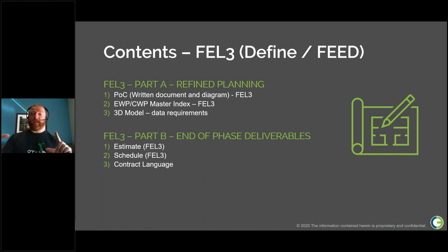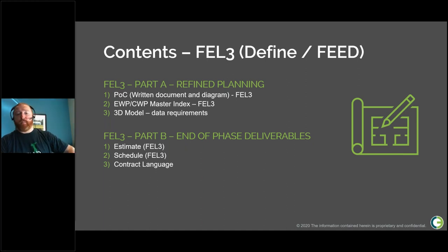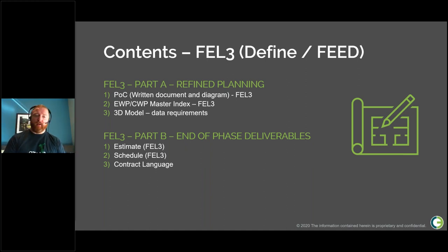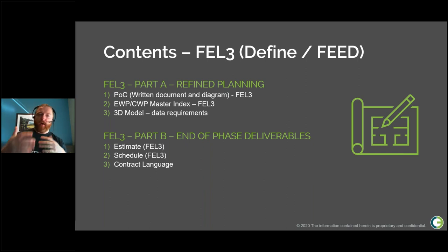FEL3 end-of-phase deliverables include updating the estimate and updating the schedule down to the CWP level of detail — a level three schedule where every EWP, PWP, and CWP is named, showing how work flows from engineering to procurement to construction. The topic of including AWP in contract language is also explored, covering best practice approaches for both content and timing.